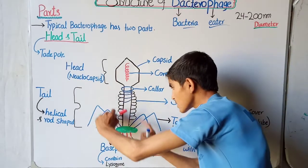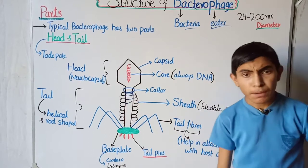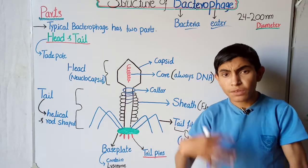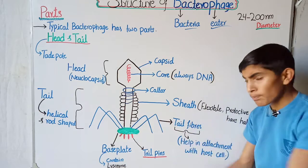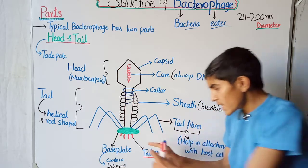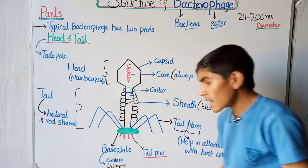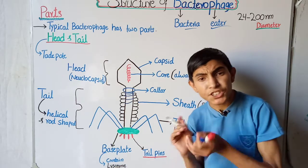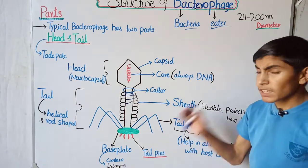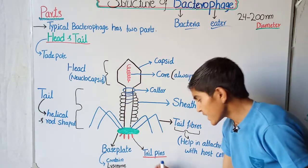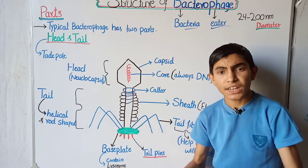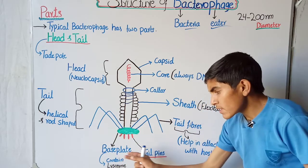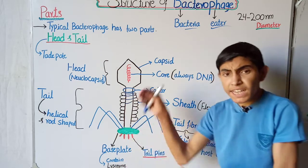These structures are called tail fibers. The function of the tail fibers is to help in attachment with the host cell — when the bacteriophage virus attaches itself to the host cell, the tail fibers help in that attachment. The green part visible here is called the base plate, and the base plate contains lysozyme, which is a type of enzyme that infects the host cell. The needle-like structures are called tail pins, which work like an injection needle.